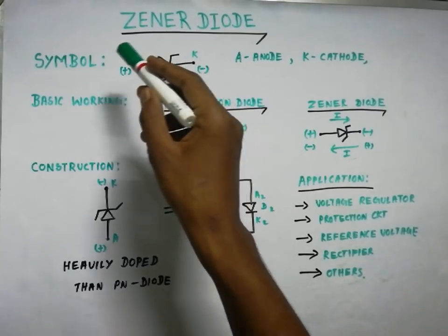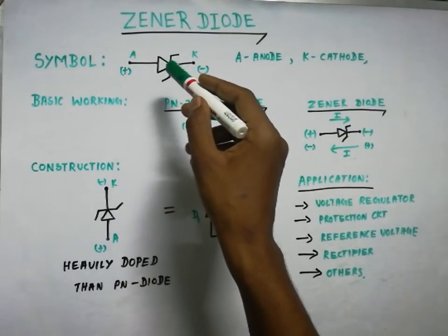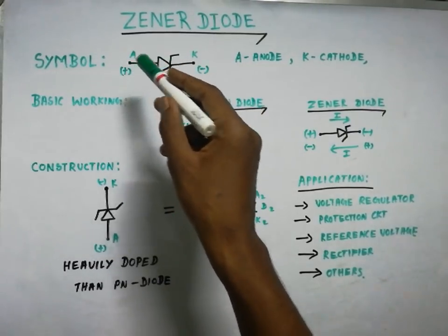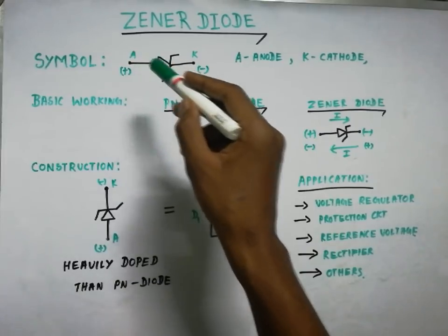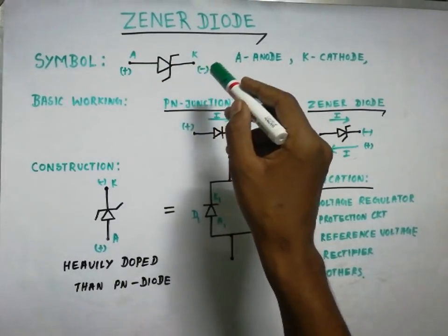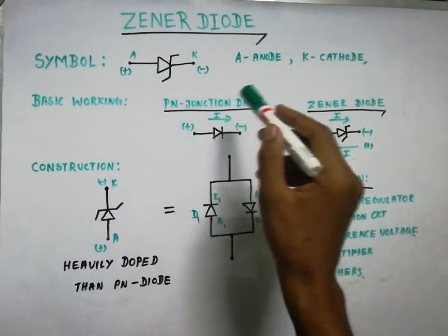As usual, the anode is the positive terminal and the cathode is the negative terminal, same as a normal diode.